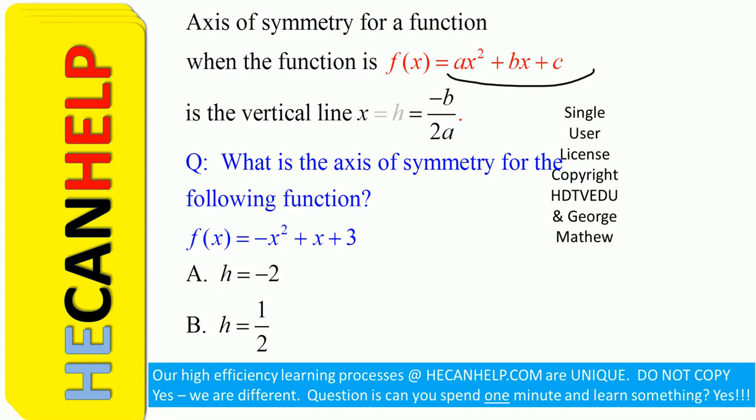So once you know a, b, and c, all you have to do is substitute a and b and get the h. The graph is always symmetric about the vertex. So what is the axis of symmetry for the following function?